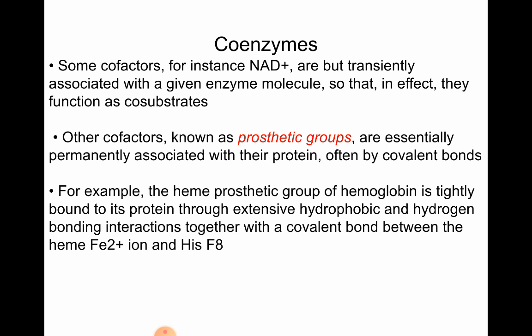Coenzymes such as NADP are only transiently associated with a given enzyme molecule, so in effect they function as cosubstrates. Other cofactors known as prosthetic groups are essentially permanently associated with a protein — as we saw with the Fe group in hemoglobin — often by covalent bonds.